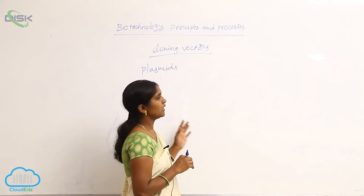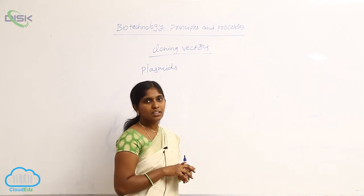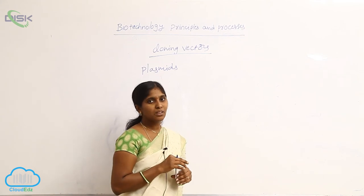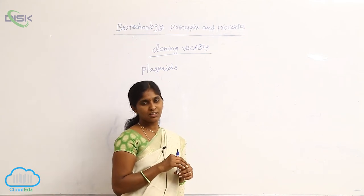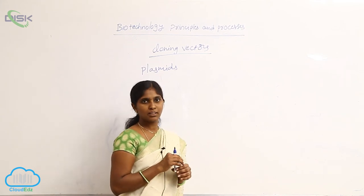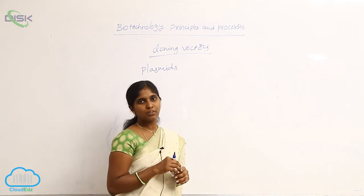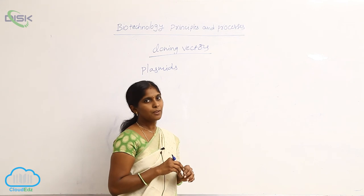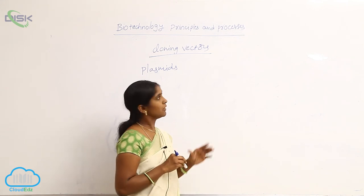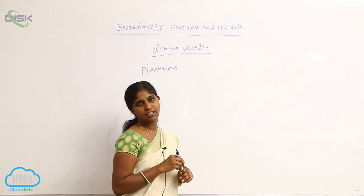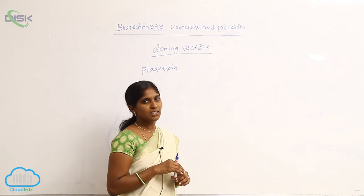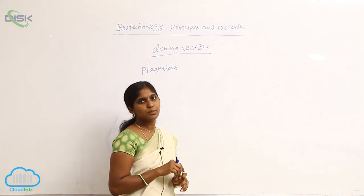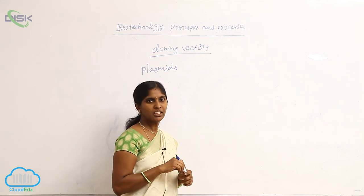The plasmid is easy to penetrate into the host organism — this is the suitable character for its selection as a vector. That is why it acts as an ideal vector in rDNA technology. It carries approximately 2 to 10 kilobases of foreign DNA.